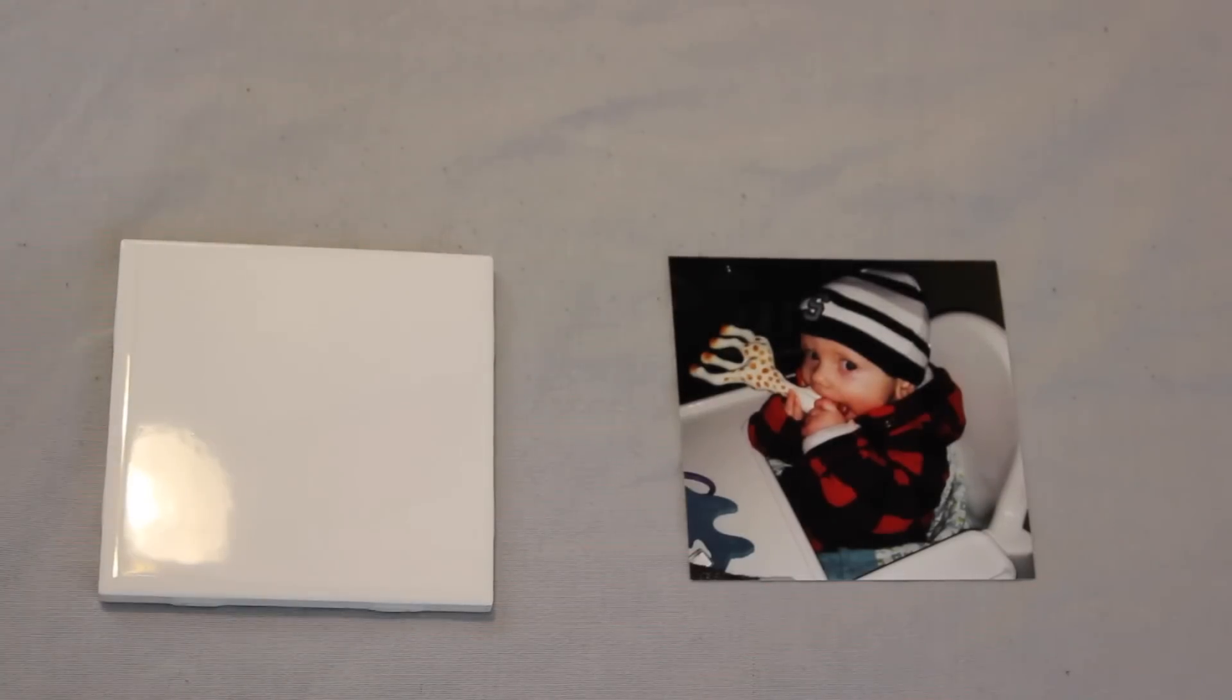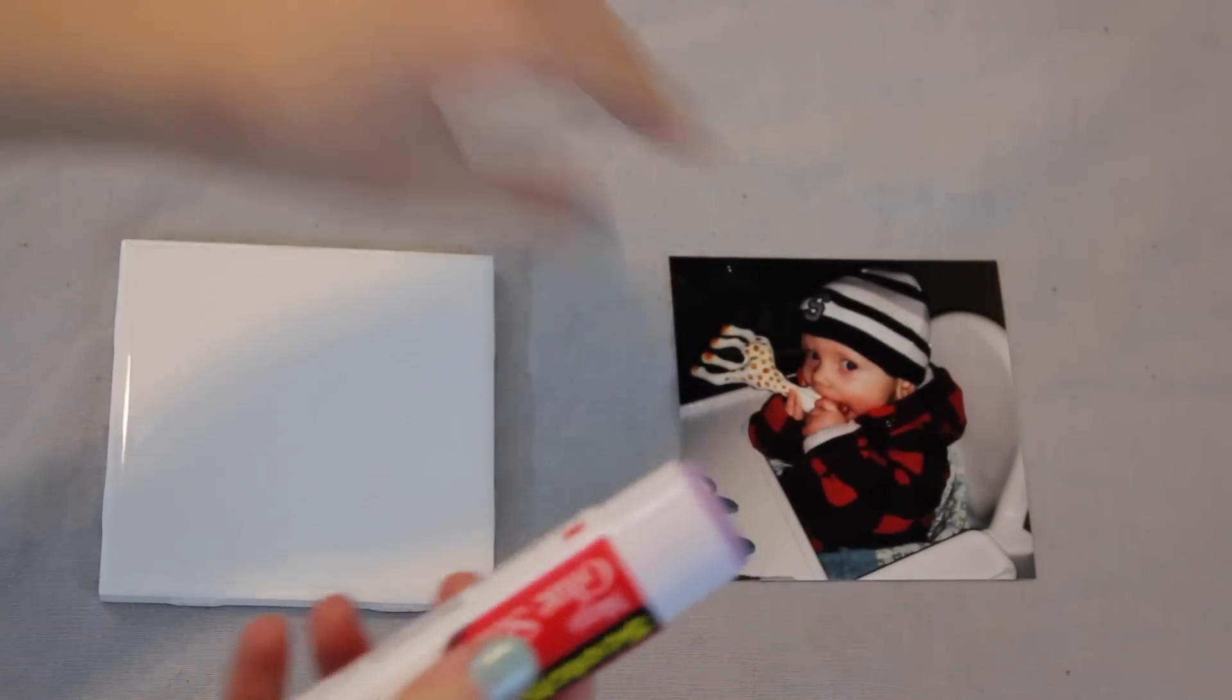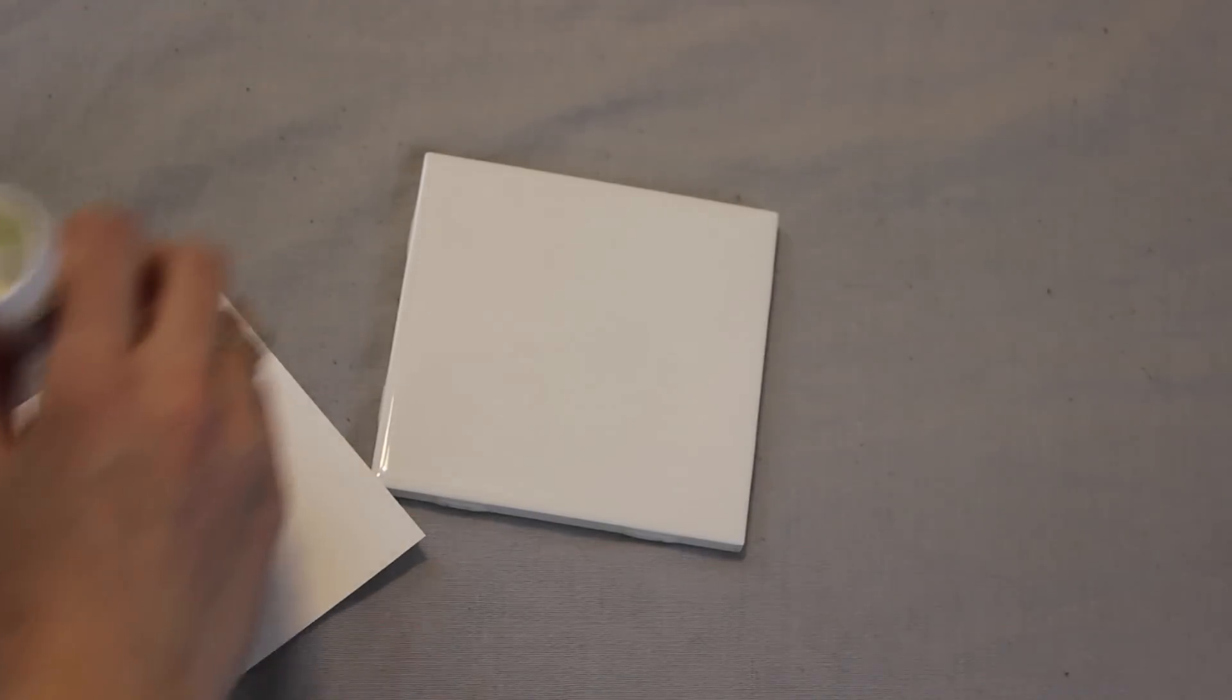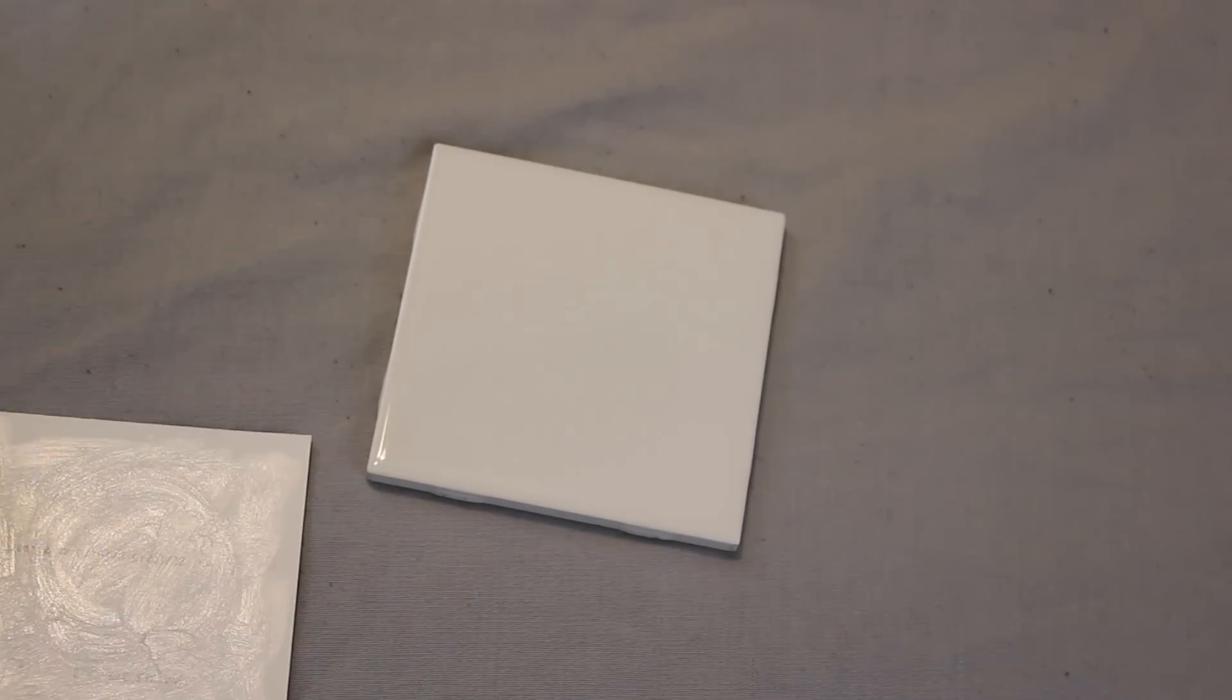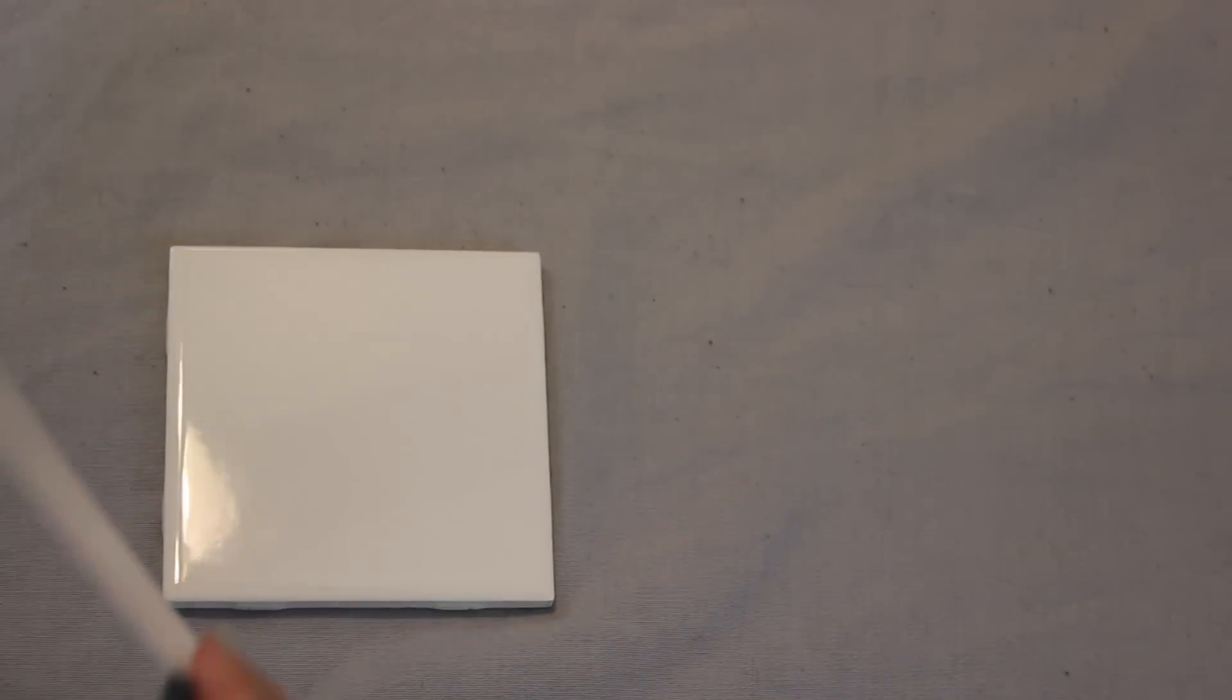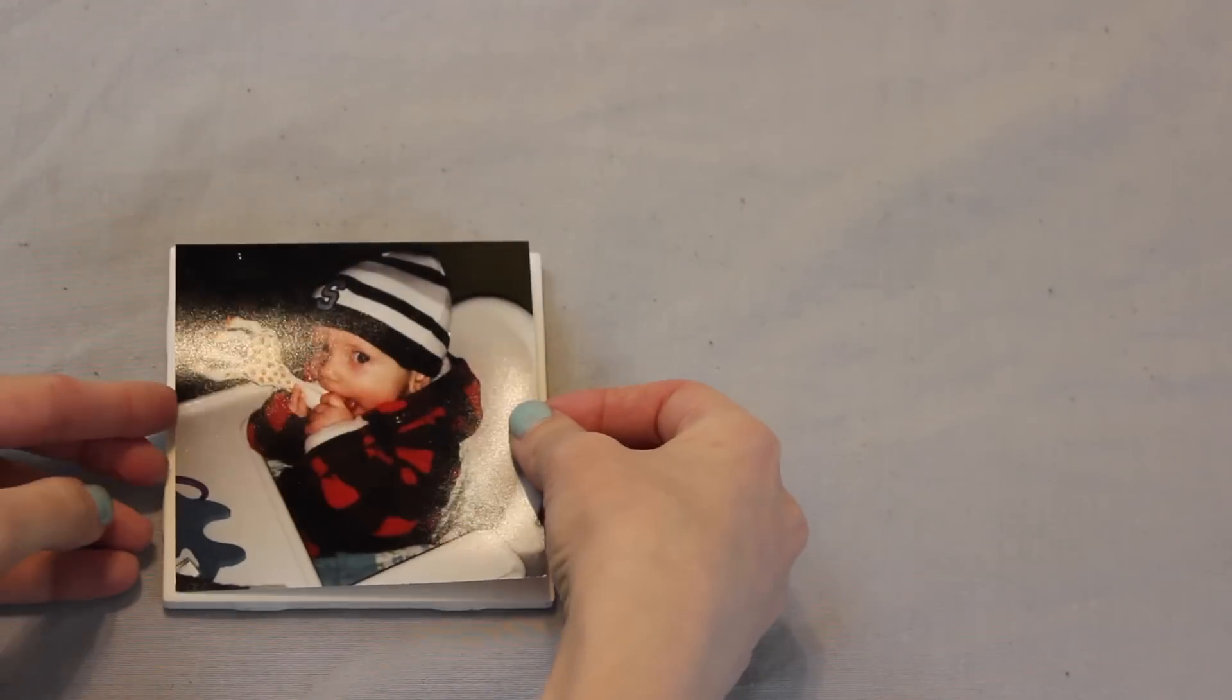Alright, to get started on these, you're going to glue your picture down to your tile. I glued very, very well on these. I made sure not to miss any part of it. Then stick it on and make sure that you are as even as you can get.